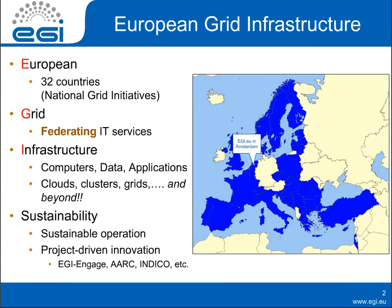EGI, the European Grid Infrastructure Collaboration, was established in 2010 after a series of projects funded by national funding agencies as well as by the European Commission. The term refers to a European-wide collaboration that also has collaborators and partners outside of Europe, but the core of the collaboration are the so-called national grid initiatives, currently 32 countries, that established the EGI.EU Institute in Amsterdam in 2010 to facilitate the provisioning of a distributed infrastructure service for the European research area.